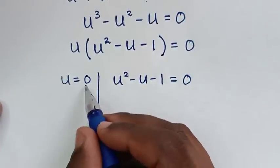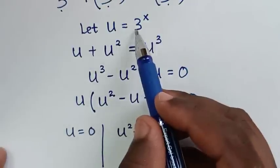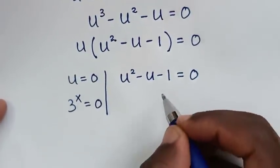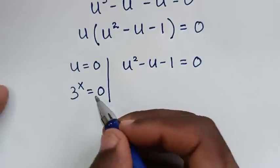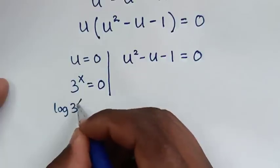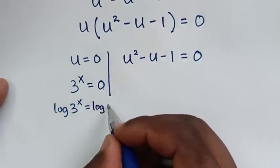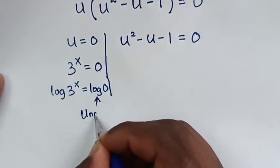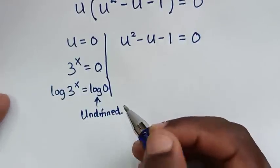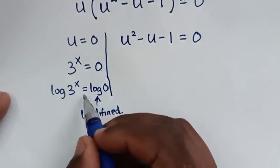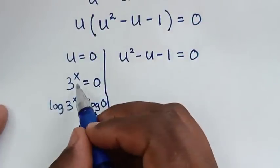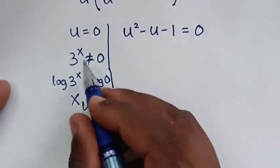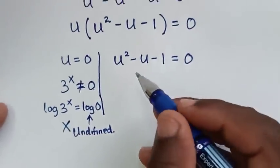From the first solution, u equals 0, and since u equals 3^x, we would have 3^x equals 0. Applying log to both sides gives log(0), which is undefined. Also, 3 raised to any power cannot equal 0, so we reject this solution.